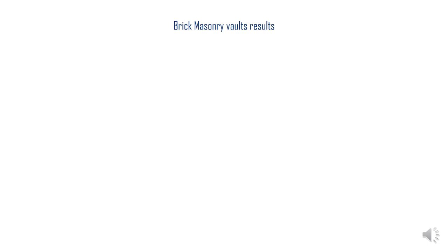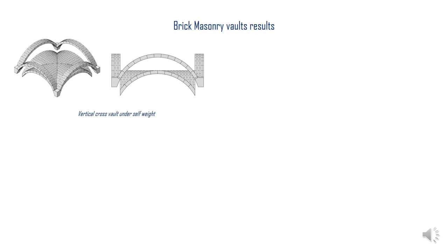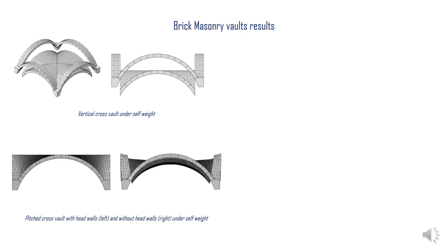The first analysis compares the behavior of vertical and pitched vaults. It can be observed that vertical brick laying does not allow for equilibrium in cross vaults, since the courses not directly in contact with the supports slide vertically. This is the reason why this pattern is not reproduced in technical treatises nor found in built examples of cross vaults. Conversely, pitched vaults are stable under self-weight only if head walls are present; otherwise a sliding mechanism occurs.